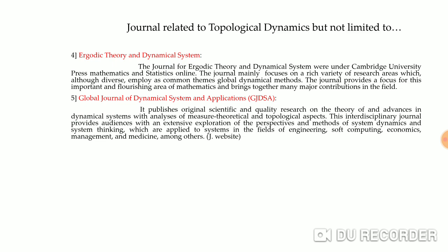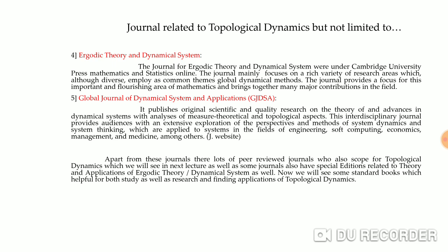The journal of Ergodic Theory and Dynamical Systems under Cambridge University Press Mathematics and Statistics is an online journal. It mainly focuses on a rich variety of research employing global dynamical methods, bridging major contributions in the field of topological dynamics. Next is the Global Journal of Dynamical System and Applications (GJDSA), which publishes original, specific, and quality research on the theory and advances of dynamical systems with analysis, measure-theoretical, and topological aspects. It also has applications in engineering, soft computing, economics, management, and medicine.